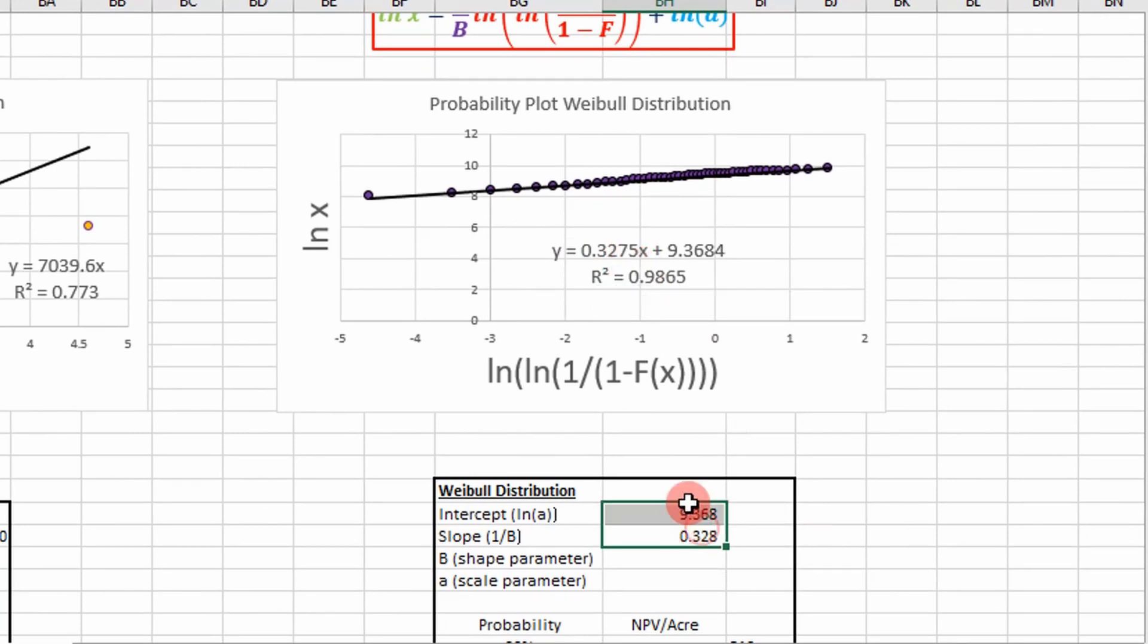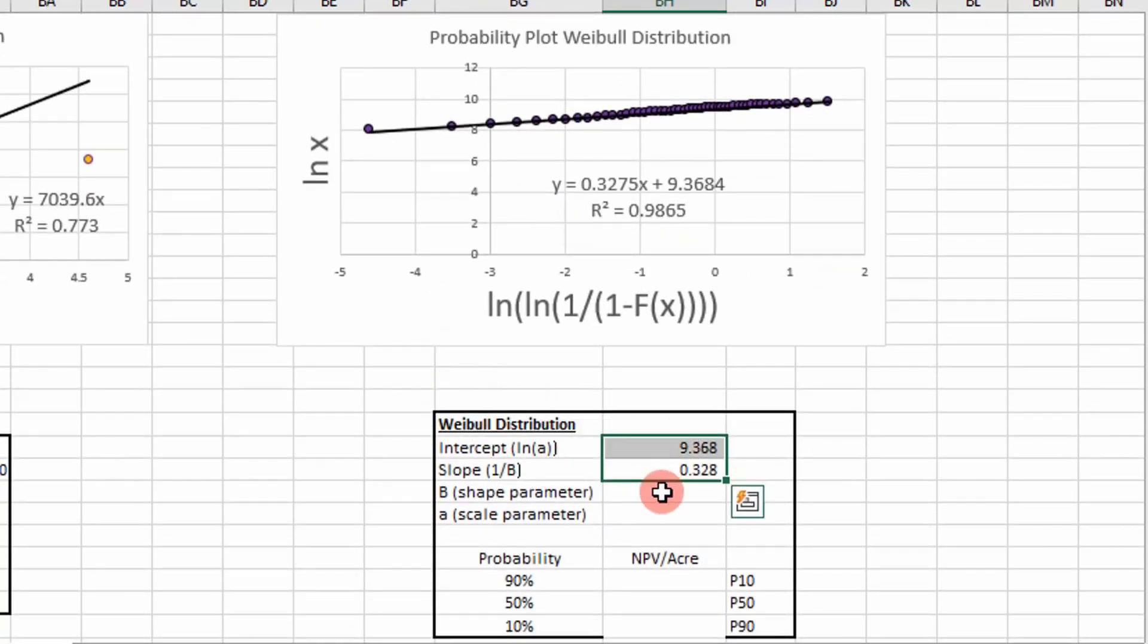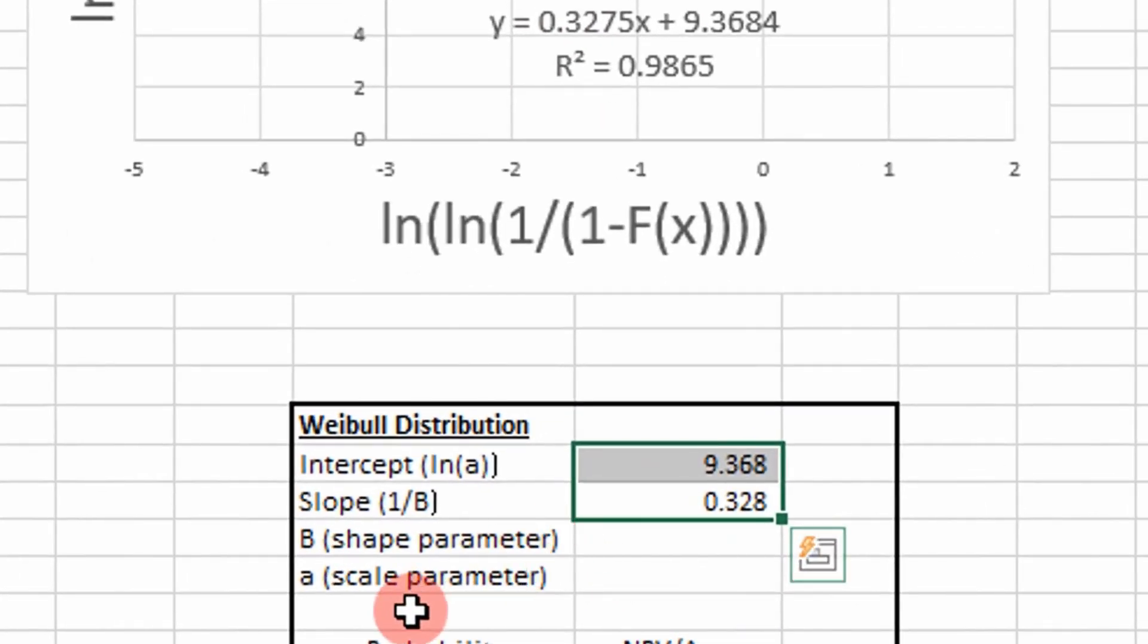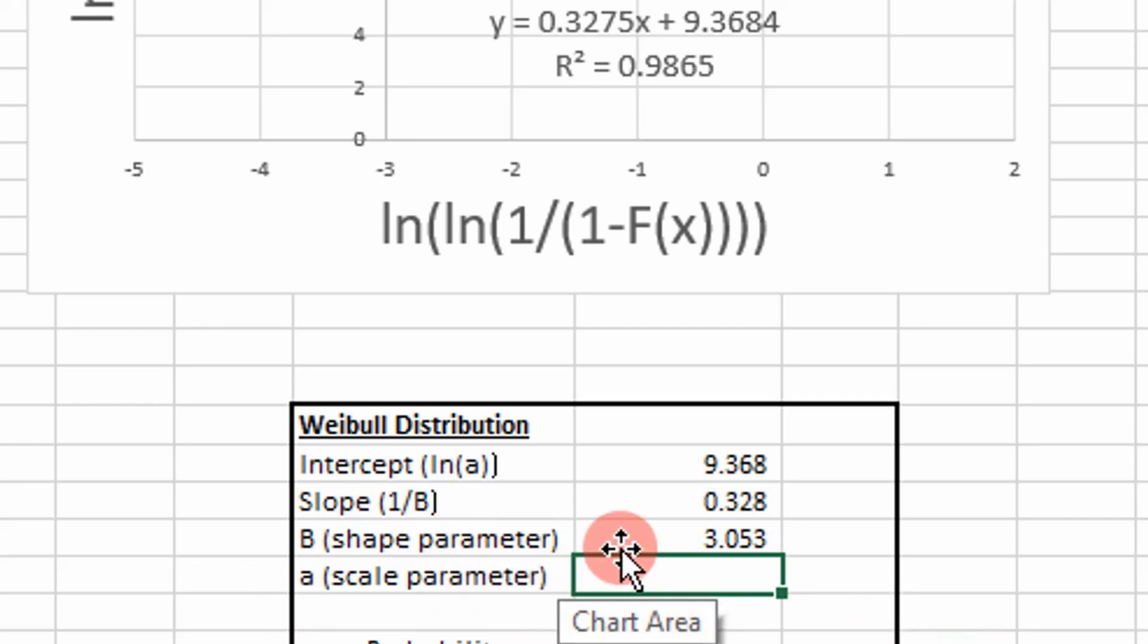We rounded to three decimal places but we get the same values. Now we need to determine the two unknowns, b and a, where b is our shape parameter and a is our scale parameter. To find b we do 1 divided by the slope. For scale parameter a we just raise our intercept to the exponential value, e to the intercept.